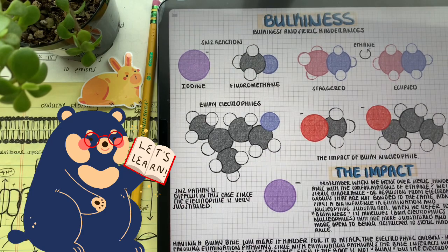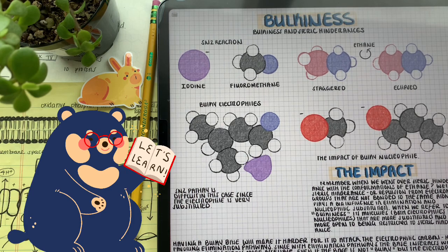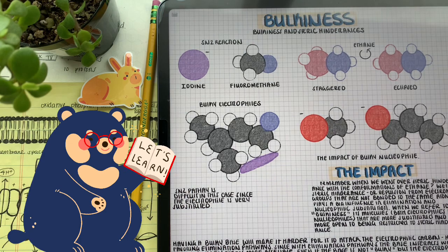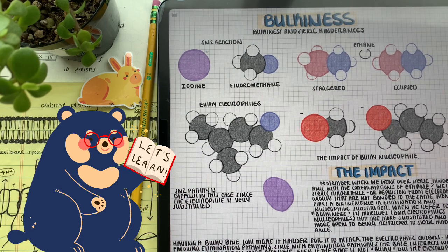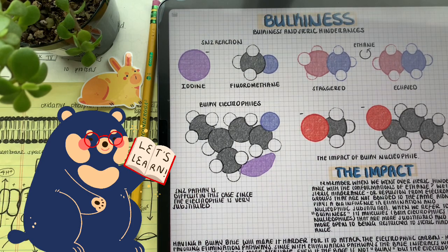Throughout the last video, we focused on nucleophilic substitution and with this video, we focused on elimination pathways. In the next few videos, we're going to be focusing on how to distinguish between doing an elimination or a nucleophilic substitution pathway depending on the situations of the reaction because sometimes these two pathways are competing.